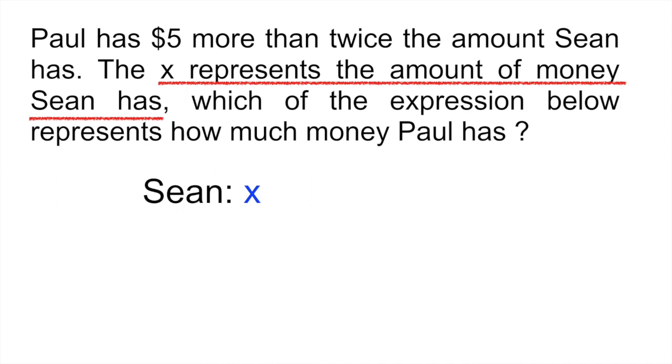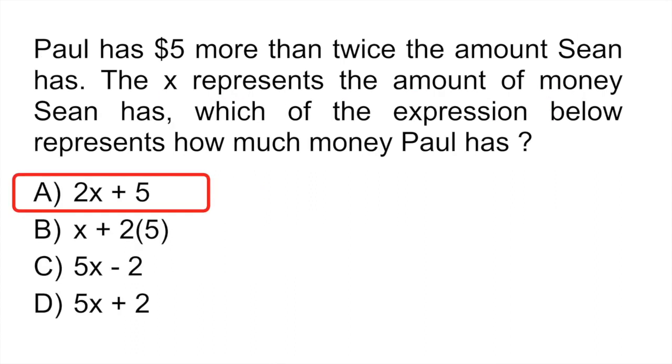So let's go back to the question. And it tells us X represents the amount of money that Sean has. So we say that Sean has X. And then it tells us that Paul has twice the amount of Sean, so that would be 2X, and he also has five dollars more. So that would be Paul: 2X plus five. Answer A.